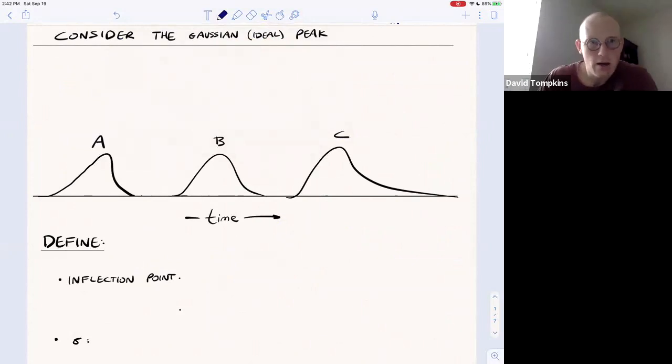Okay, so now I want to focus on the ideal or Gaussian peak, which has some well-defined statistical parameters from which we can calculate things like resolution and plate number and plate height.